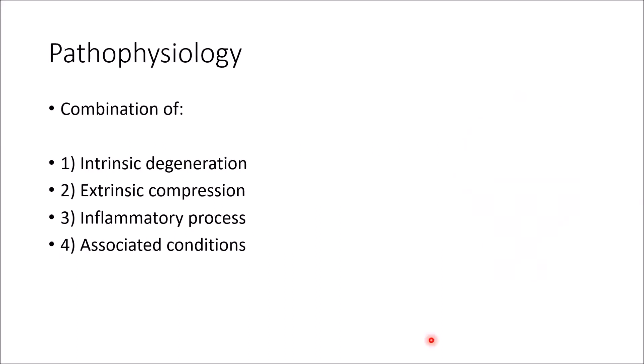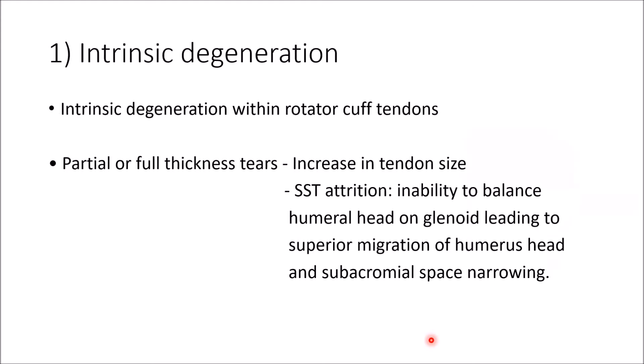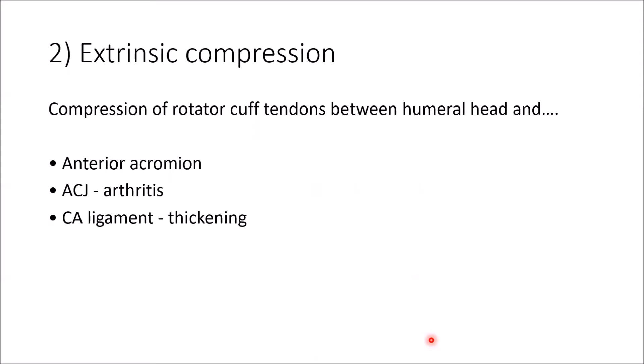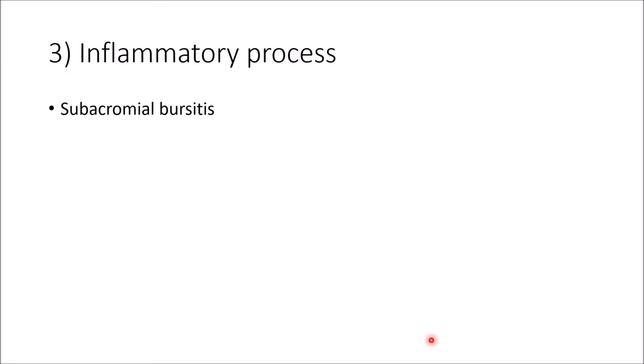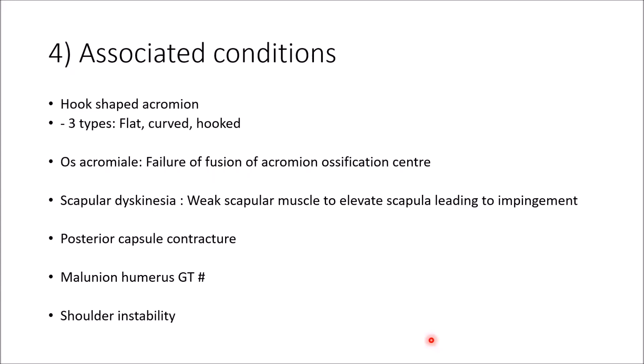The pathophysiology is divided into intrinsic degeneration, extrinsic compression, inflammatory process, and associated conditions. Intrinsic degeneration refers to degeneration within the rotator cuff tendon — partial or full thickness — causing an increase in tendon size, supraspinatus weakness, imbalance, inability to balance the humeral head onto the glenoid, superior migration of the humeral head, and subacromial space narrowing. Extrinsic compression is compression of the rotator cuff tendon between the humeral head and the anterior acromion, ACJ arthritis, or coracoacromial ligament thickening. The inflammatory process is mainly due to subacromial bursitis.